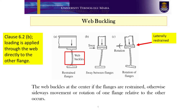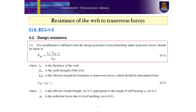Meanwhile, if the beam is loaded as stated in Clause 6.2B, by forces transferred through the web directly to the other flange, the failure mechanism will be buckling of the web over most of the depth of the member, provided that the compression flange is adequately restrained in the lateral direction. Provided that in our example the compression flange is adequately restrained laterally, the design resistance of webs of rolled beams under transverse forces can be determined in accordance with the recommendations in Clause 6 of EC3 part 1.5.